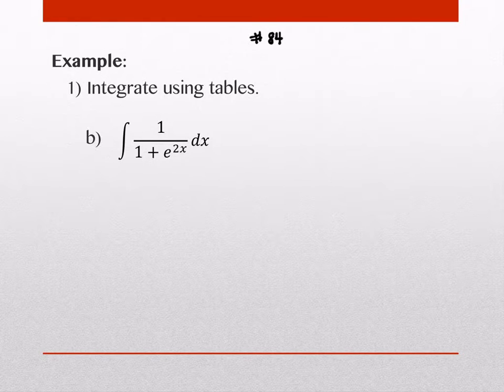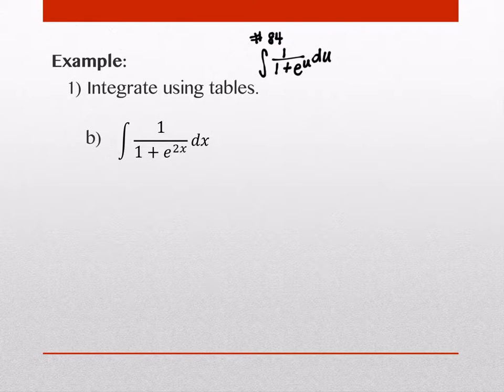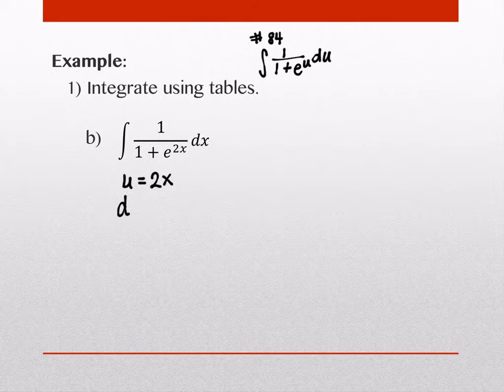On number 84, it uses the integral of 1 over 1 plus e to the u du. That's not exactly what we have, but it's close. What would our u be? 2x. And if I did that, what would du be? 2 dx, which is not in my problem. But constants that are not in my problem are really not a problem at all.